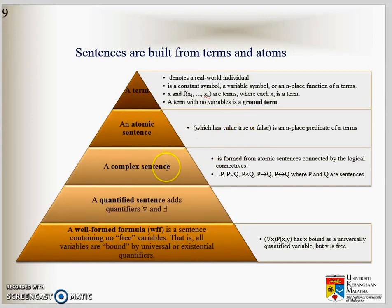And then complex sentence, formed from atomic sentences connected. We connect the several sentences to get a complex sentence. And then we have a quantified sentence, whereby we have the quantifier, the universal and also the existential. We will look at the example after this.